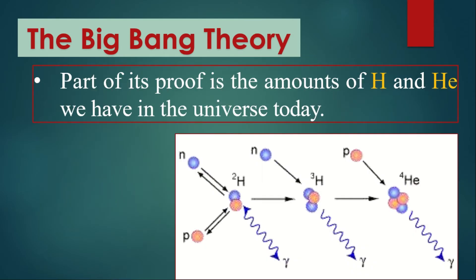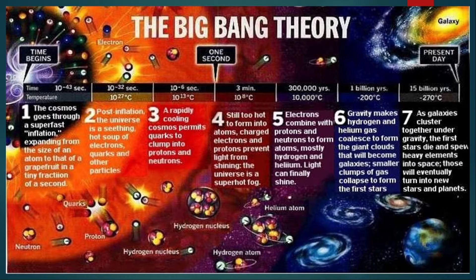The Big Bang Theory — part of its proof is the amounts of hydrogen and helium we have in the universe today. From time zero until 10 raised to negative 43 seconds, all matter and energy in the universe existed as a hot, dense, tiny state which we call the singularity. The cosmos then goes through a super-fast inflation, expanding from the size of an atom to that of a grapefruit in a tiny fraction of a second.